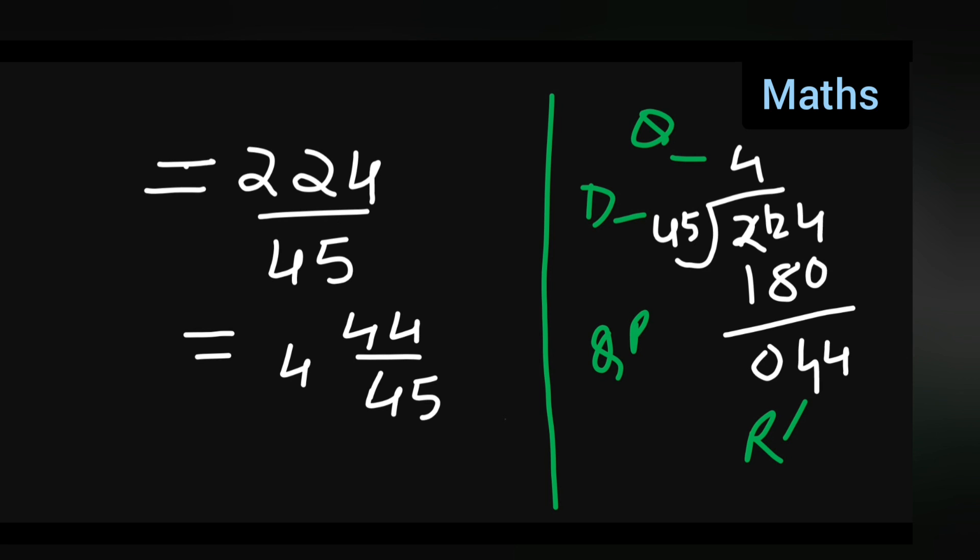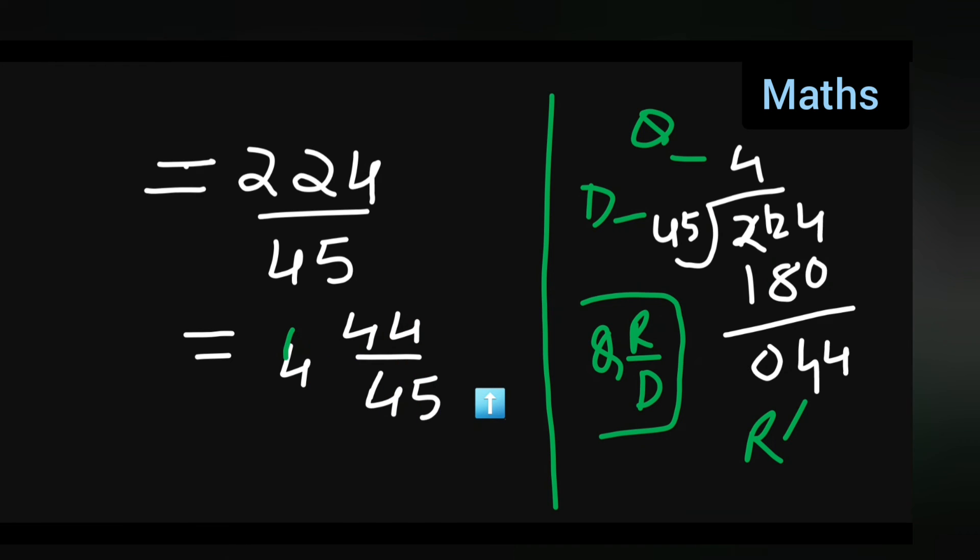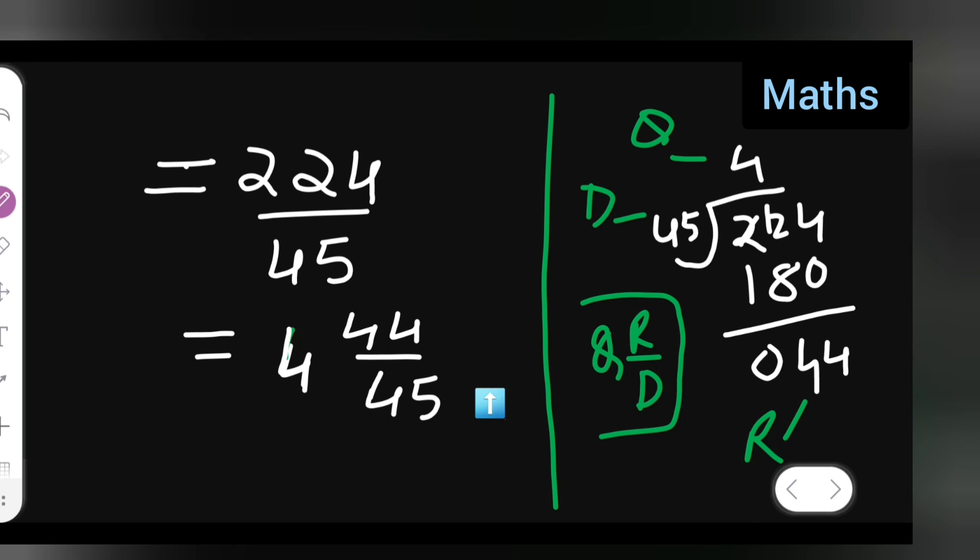Quotient, remainder upon dividend. This is the formula. So if you all want to write this in the mixed fraction form, this is the mixed fraction form of writing. So I hope you all have understood how to multiply the given fractions.